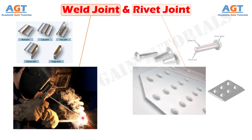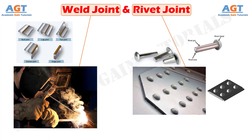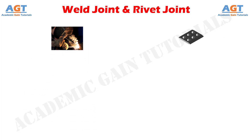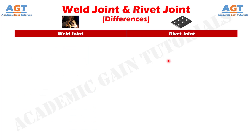A riveted joint is a permanent joining process, with mainly two components or parts to be joined, which are held together by a rivet with the head at top and tail at the bottom. So, let's look into the basic differences between welding and riveting in a tabular form.